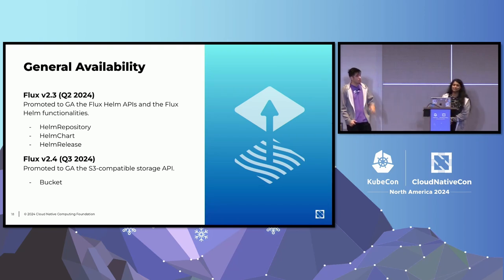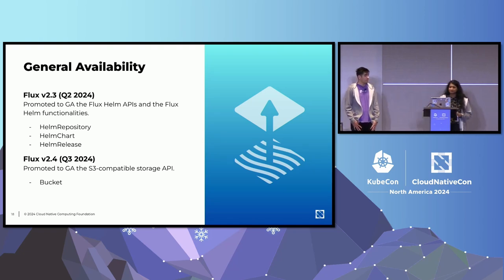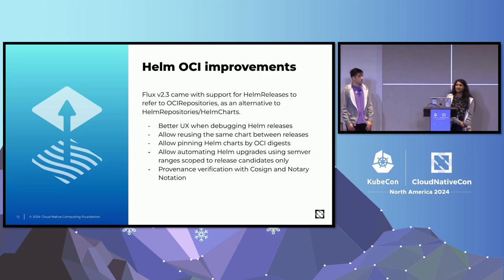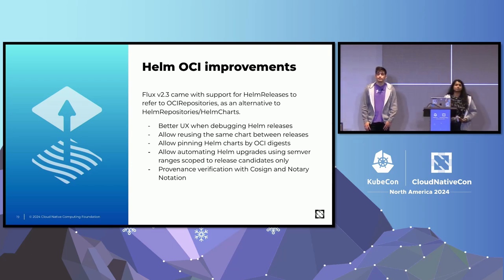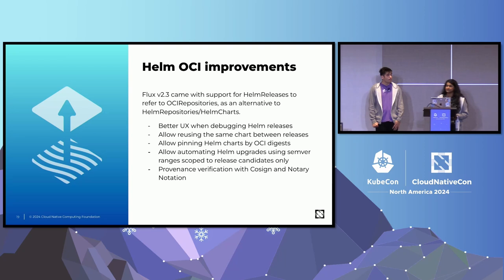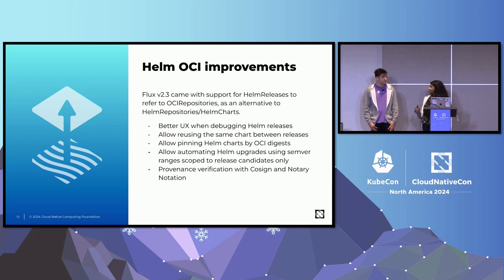In Flux 2.3, which came out in Q2 of this year, we promoted to GA the Flux Helm APIs and Helm functionalities. In 2.4, we promoted to GA the S3-compatible storage API — the bucket API. The Helm OCI improvements are exciting: Flux 2.3 added support for Helm releases to refer to OCI repositories as an alternative to Helm charts, giving a better UX when debugging Helm releases. It allows reuse of the same chart between releases, pinning of Helm charts by OCI digest, automating Helm upgrades using SemVer ranges scoped to release candidates only, and provenance verification with Cosign and Notary Notation — which we added recently.